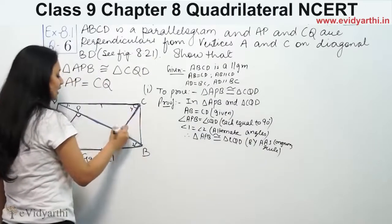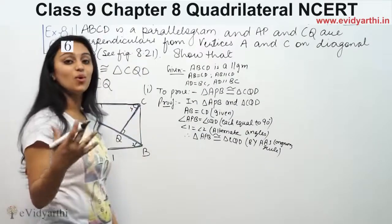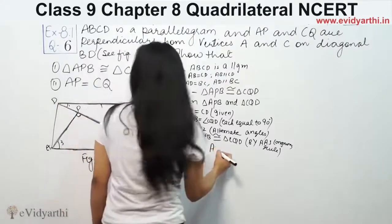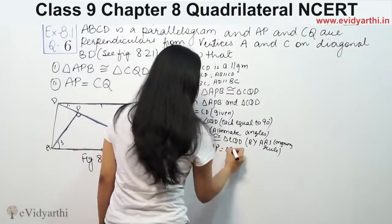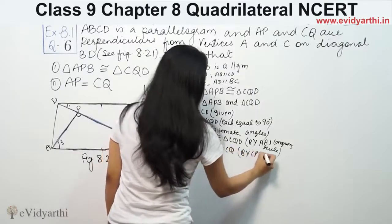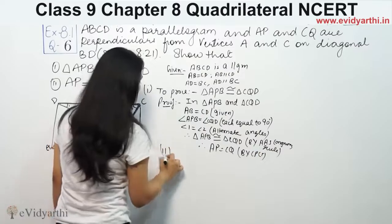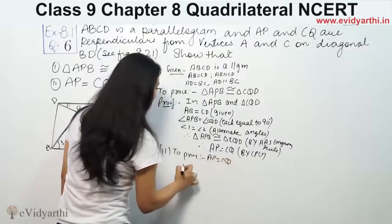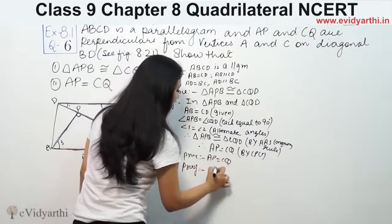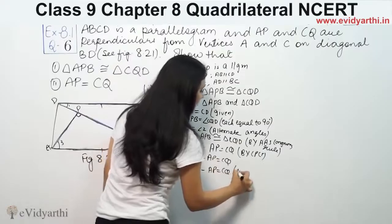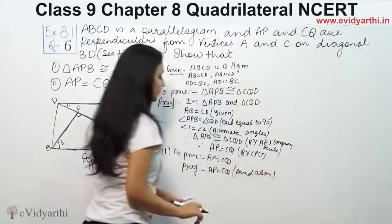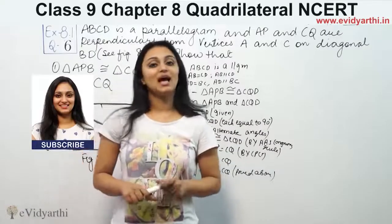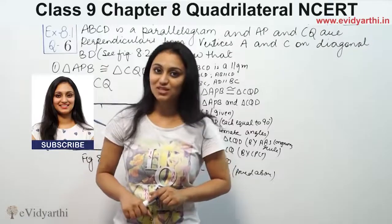So we can see that AP is equal to CQ, because if triangles are congruent then corresponding parts are equal. Therefore AP is equal to CQ by CPCT. This was question number 10 from exercise 8.1. Do watch the next video for more questions. Goodbye.